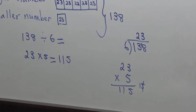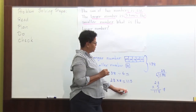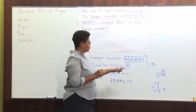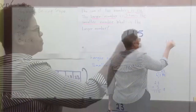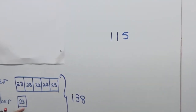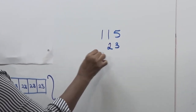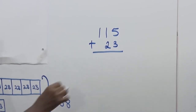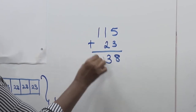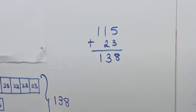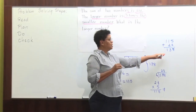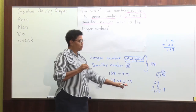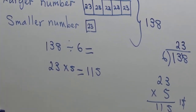I'm going to check to make sure that it's correct. The problem said the sum of two numbers is 138. So if I put 115 as my larger number and 23 as my smaller number, if I add them together I should get 138. Five and three is 8, two and one is 3, bring down the one hundred — so the sum of these two numbers is 138. So my answer, 115, is correct. 115 is the larger number.